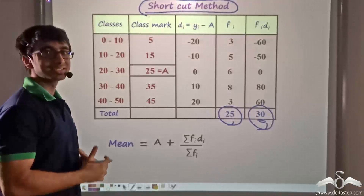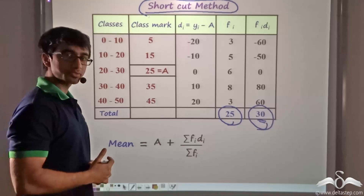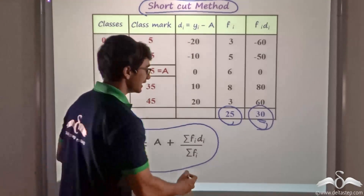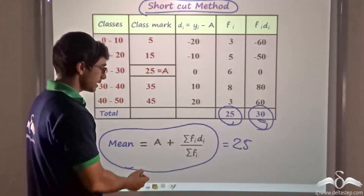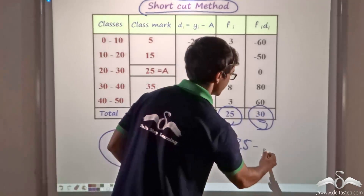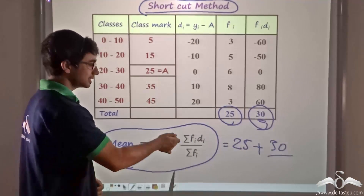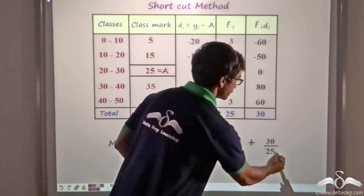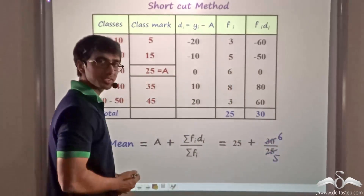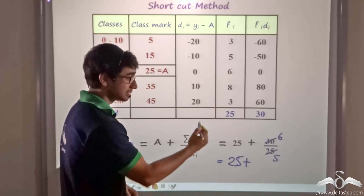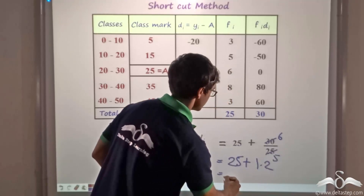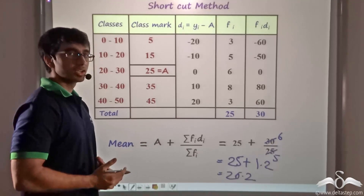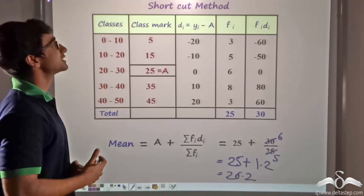Quite rightly so, because it greatly reduces the time for calculation. The formula for the mean using the shortcut method is: mean equals A plus ΣFiDi divided by ΣFi. So we add the assumed mean A which is 25, plus ΣFiDi which is 30, divided by ΣFi which is 25. Taking the common factor five, this gives 25 plus six-fifths, which is 1.2, giving us 26.2 — the same result as the direct method. No hefty calculations are involved, hence the name shortcut method.